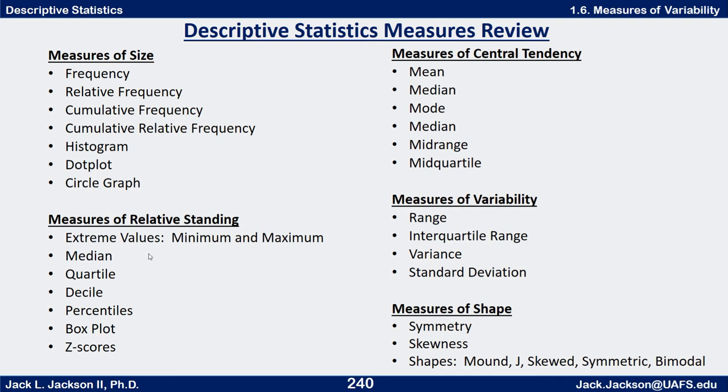We also have measures of relative standing. The most basic ones were the minimum and maximum, the extreme values. Then we looked at the median, and those three values were the half-tiles dividing the data into halves. Then we did the five quartiles including the minimum, maximum, median, Q1, and Q3, which divide the data into fourths. Similarly, we could do deciles and percentiles dividing into tenths and hundredths. The box plot was a graphical representation of the quartiles, and z-scores gave us another measure of relative standing.